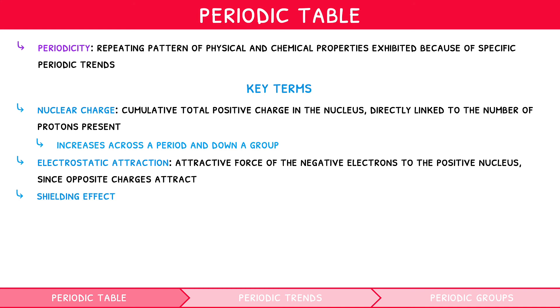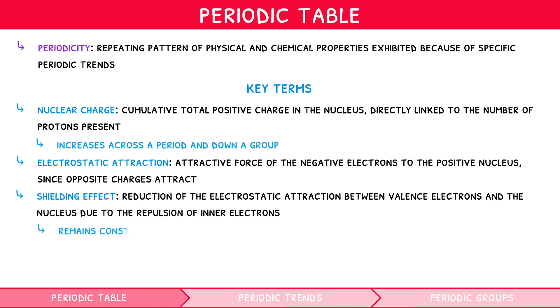Shielding effect – this is the reduction of the electrostatic attraction between valence electrons and the nucleus due to the repulsion of inner electrons. It remains constant across a period, but increases down a group.